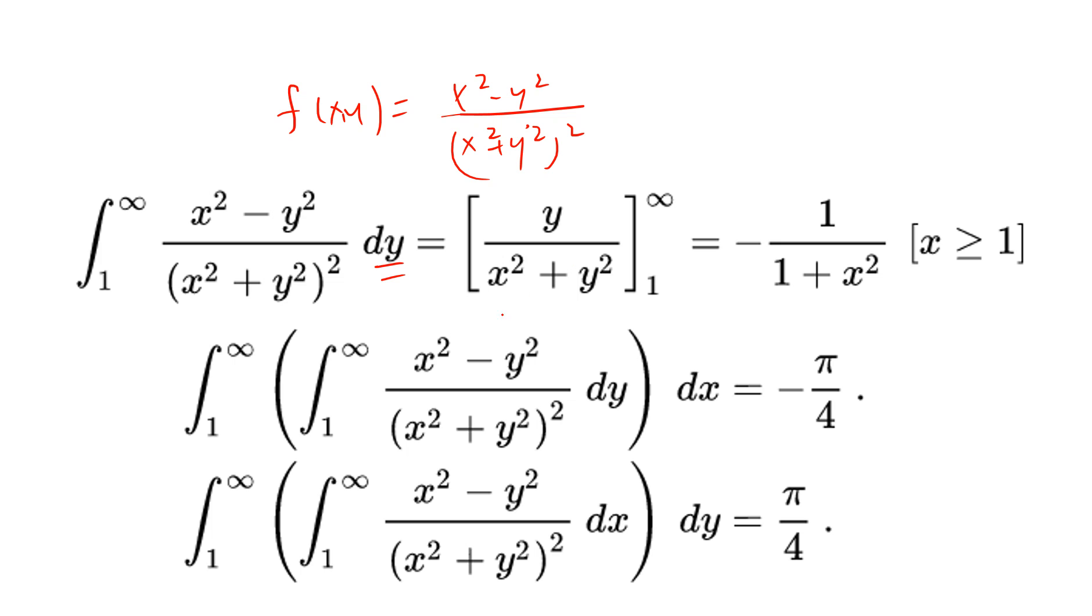Now if you do a dy integration, you will get this. When you put y to infinity then it will be 0, minus when y equals 1, so you get 1 divided by (1 + x²). This is our familiar friend, this dx divided by (1 + x²) is arctan(x).